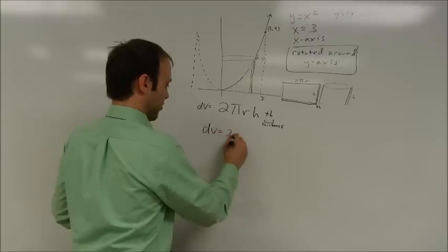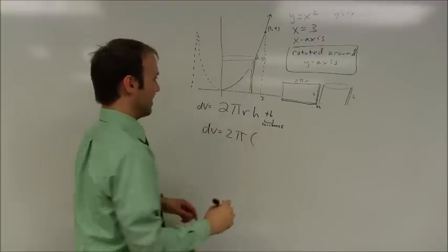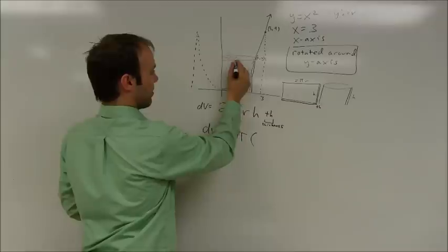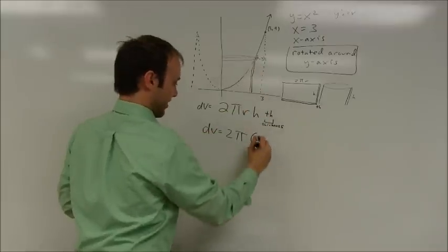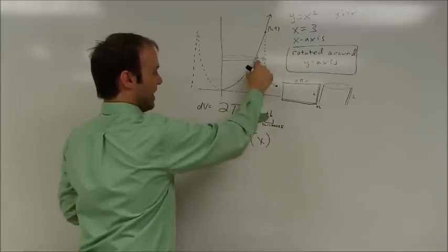dv is equal to 2 times π times the radius. Now, the radius in this case of this thing, of course, is going to be going out to here. That radius is x.